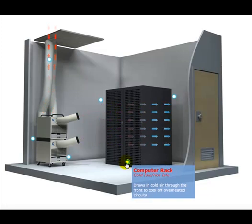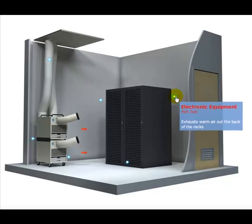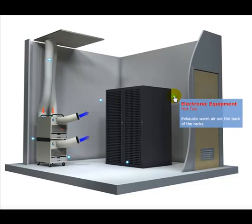This is a typical computer rack. It draws in cold air through the front to cool off your servers. The exhaust warm air comes out of the back of the racks.